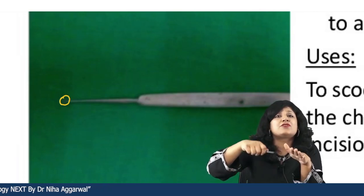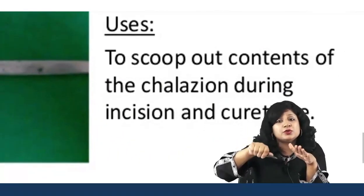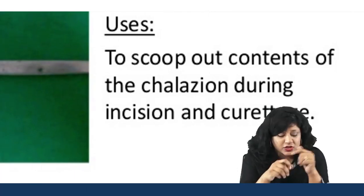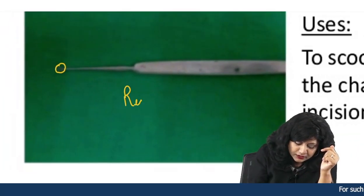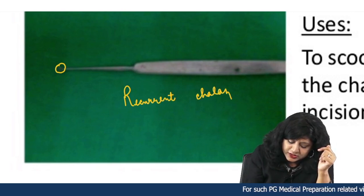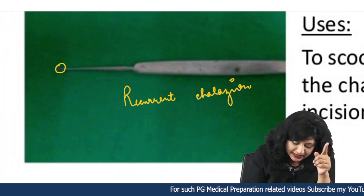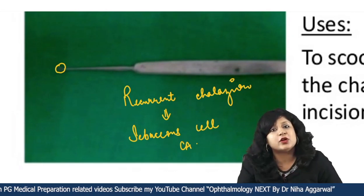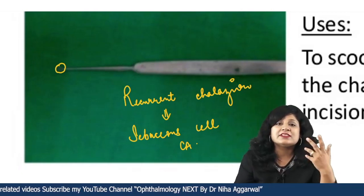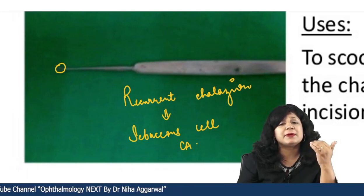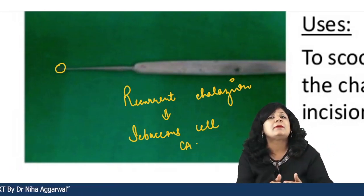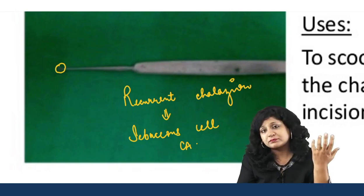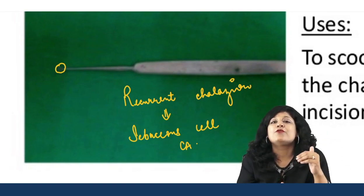Once you are thorough and have removed all the contents, you curettage that area after the incision. Why are we so keen on curettage? Because we know that recurrent Chalazion can cause sebaceous cell carcinoma. There is always a risk, and that is why the question is often asked: if a patient has a recurrent Chalazion, what is the most common malignancy we fear? Sebaceous cell carcinoma — because the infection was occurring in a sebaceous gland.